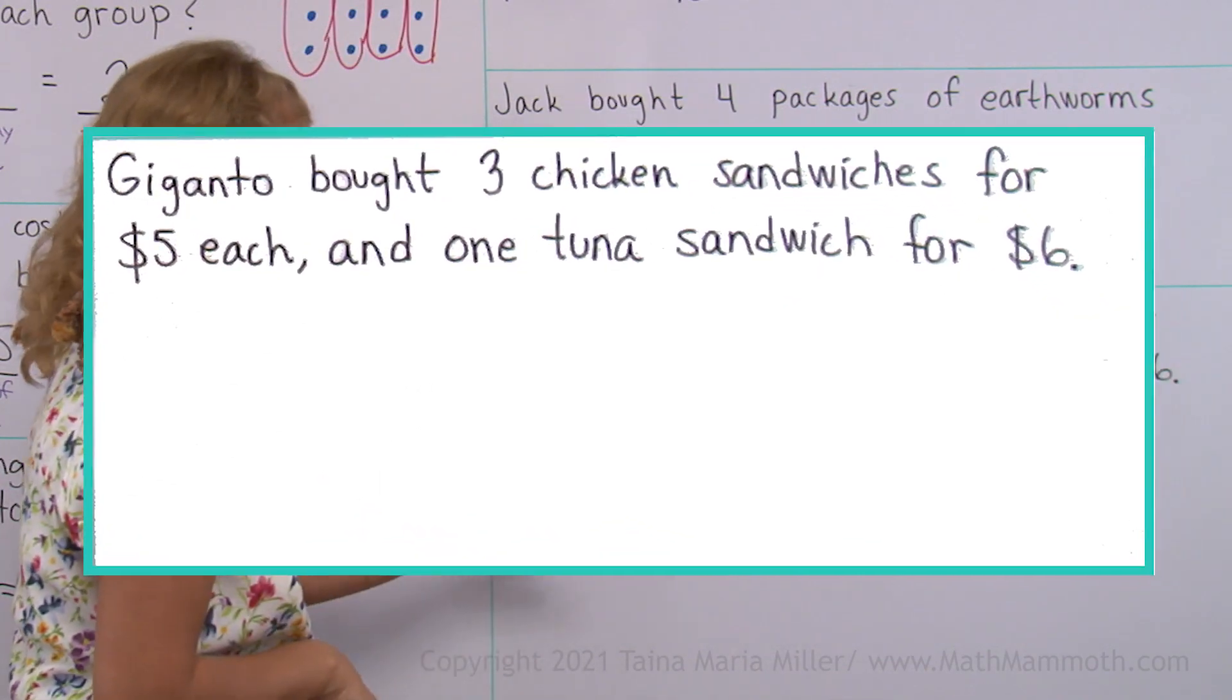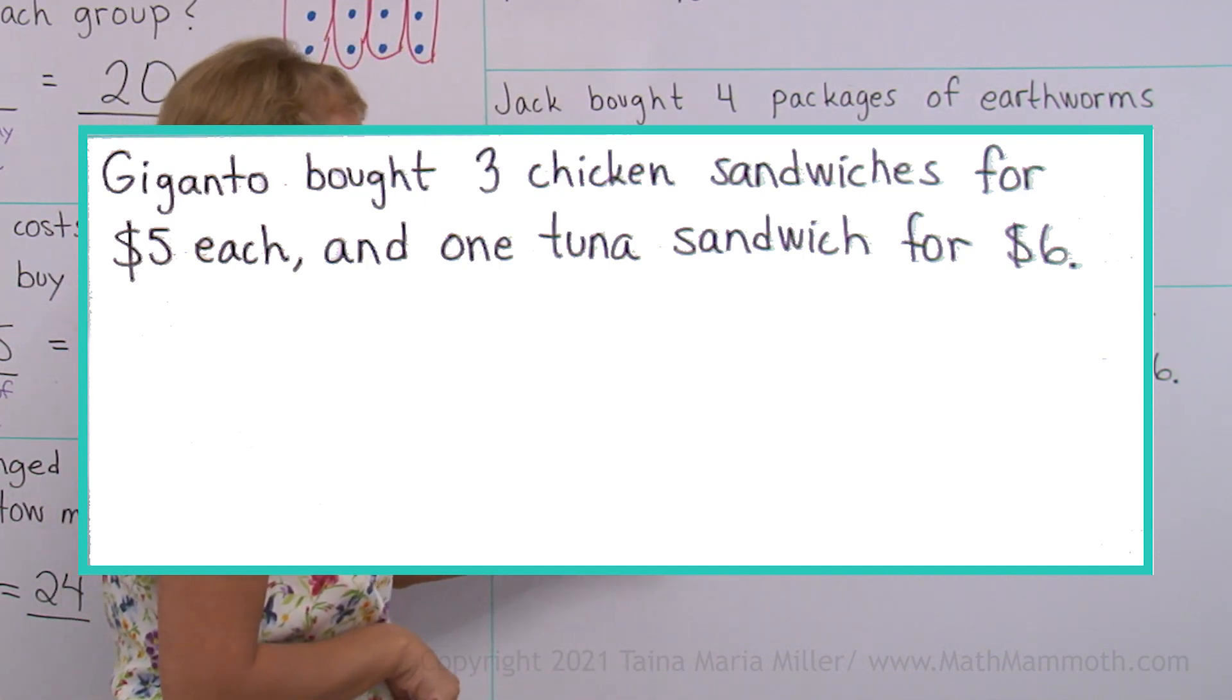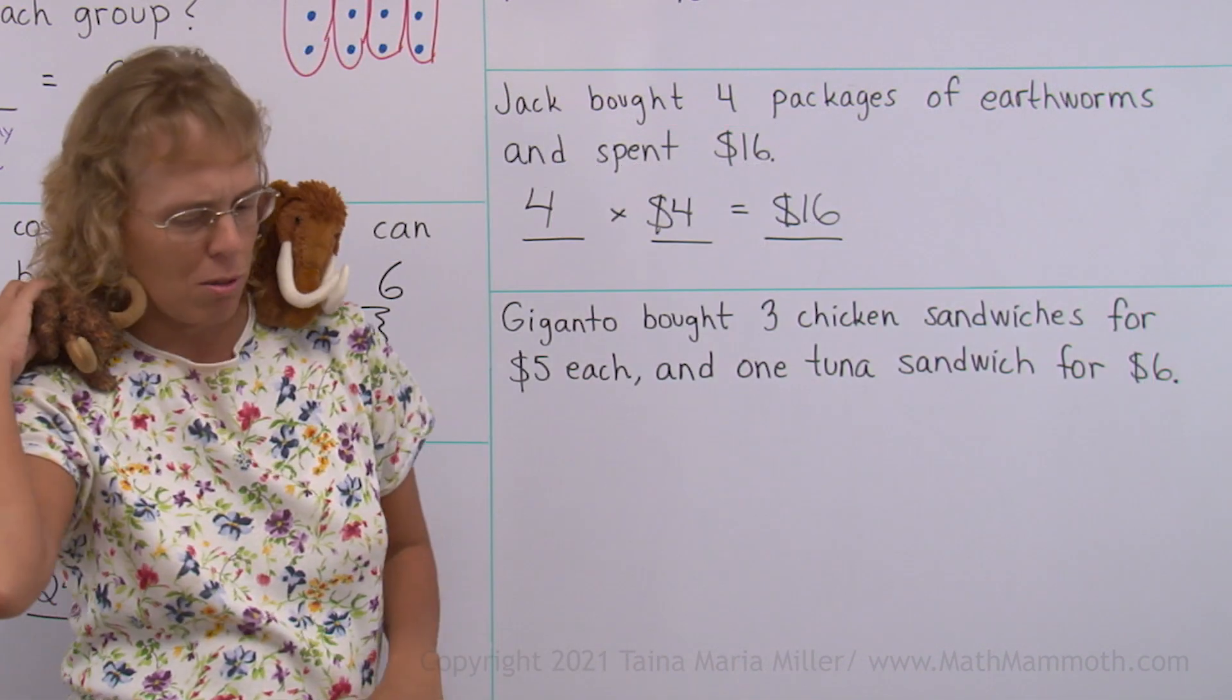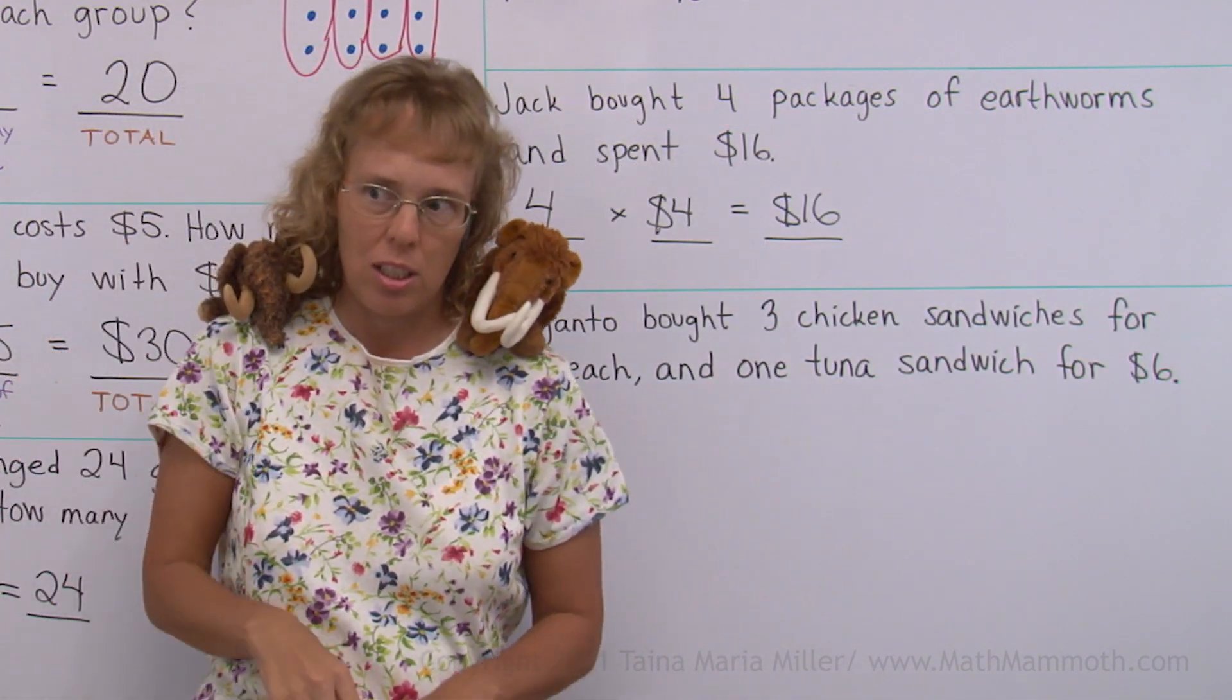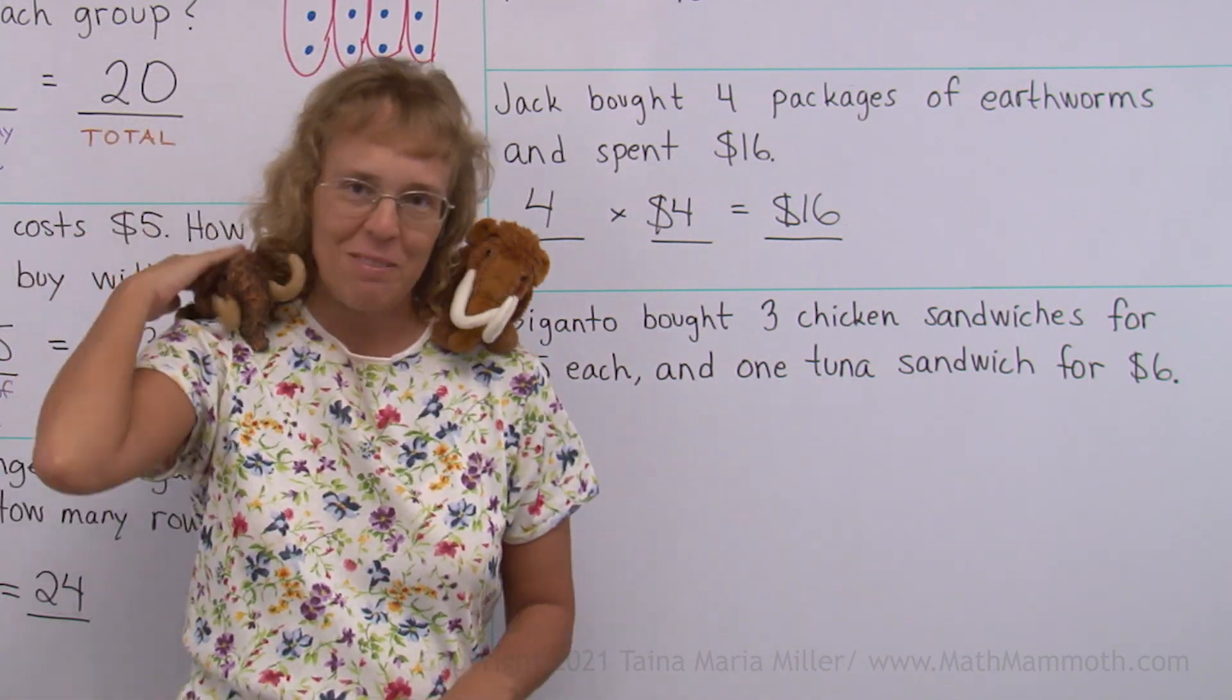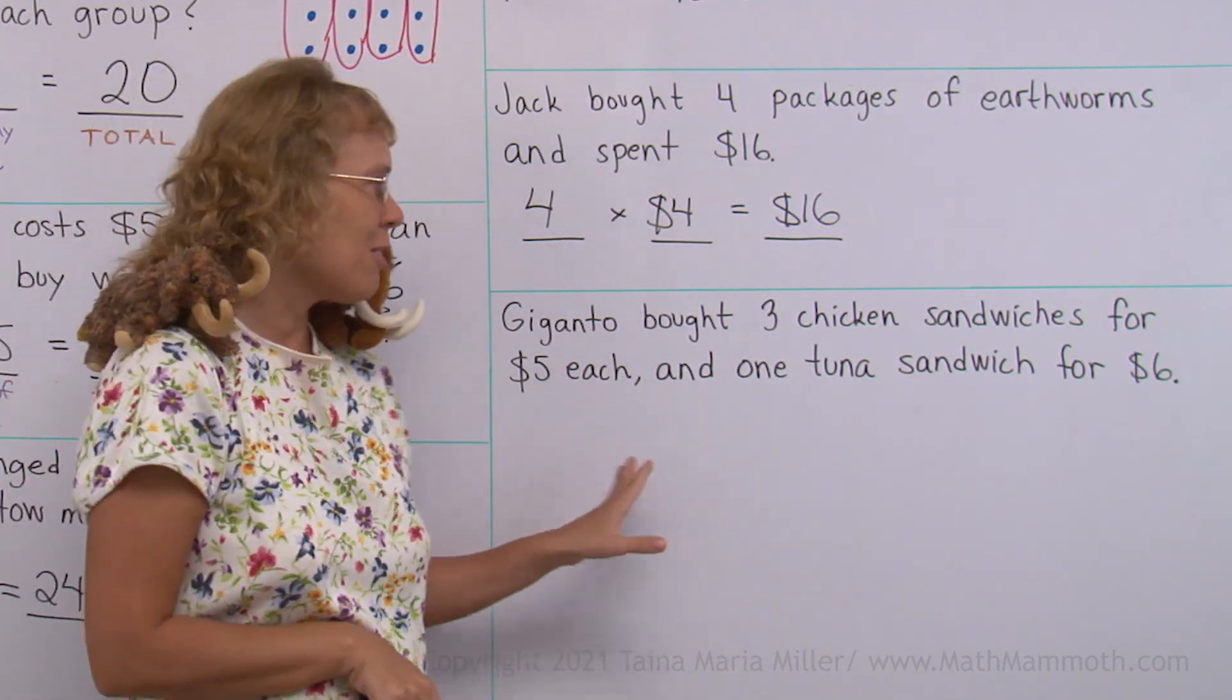So here we have a word problem Giganto just for you. Wanna read it? Giganto bought three chicken sandwiches for five dollars each and one tuna sandwich for six dollars. And what's that? Why not a shrimp sandwich? Well, I guess I didn't know you liked them best. Let's just solve this. What do we solve? It doesn't have a question again.